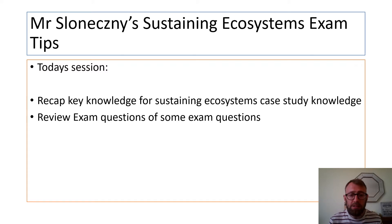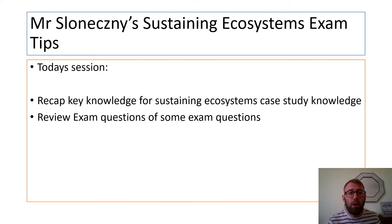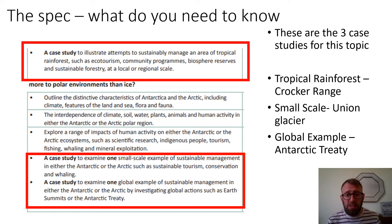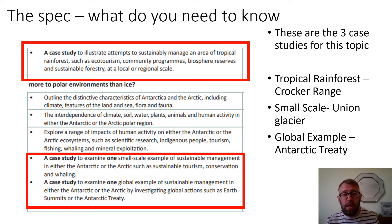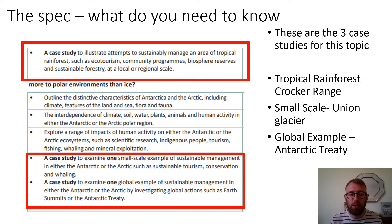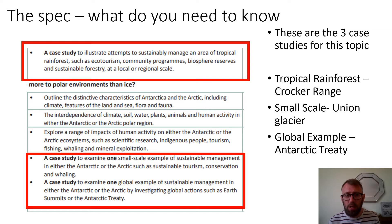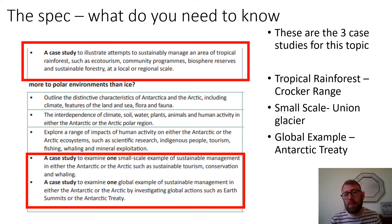We're going to look at ecosystems case study knowledge. You should feel confident with that work from the last week, and I want to look over some of the exam questions I set you and give feedback on where we need to tweak things. A lot of people are making the same mistakes, and if we can get those right we should be in a really strong position going into next year. From the spec, there are three key parts to focus on: attempts to sustainably manage an area of tropical rainforest — that's the Crocker Range Biosphere Reserve — and for polar environments we need two examples: a small-scale example, Union Glacier tourism, and a global example, the Antarctic Treaty. Make sure you know the difference between small scale and global scale.